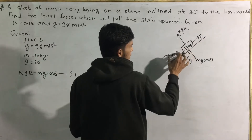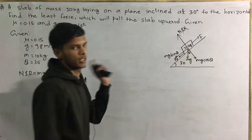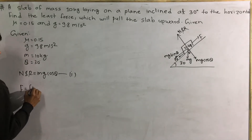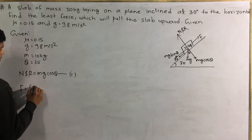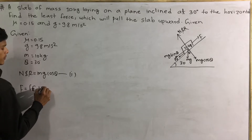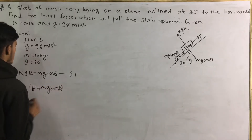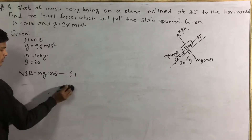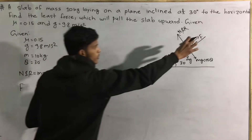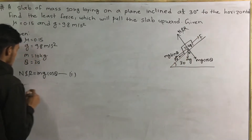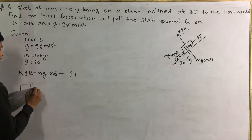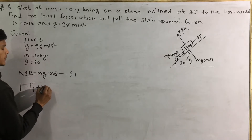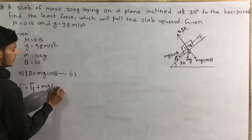So we have: Mg sin theta plus the frictional force F_f plus Mg sin theta. F is equal to Mg sin theta.